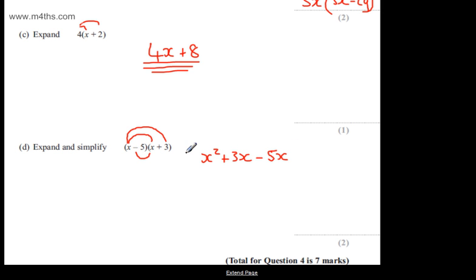And then finally the last, which is -5 multiplied by +3, which is -15. I'm now going to collect the like terms and tidy up. If I've got +3x - 5x, that's -2x. So we'll have x² - 2x - 15.